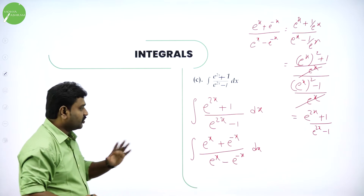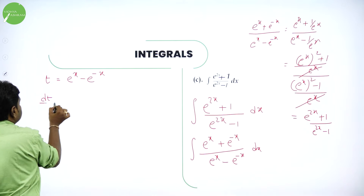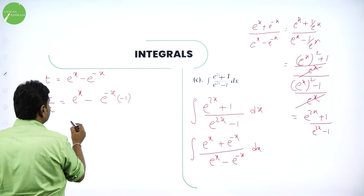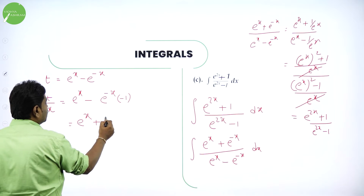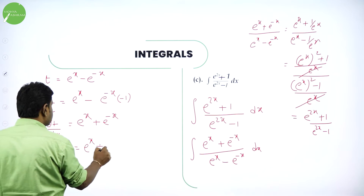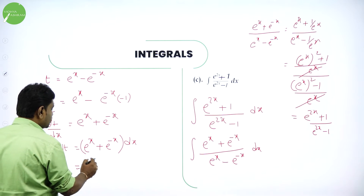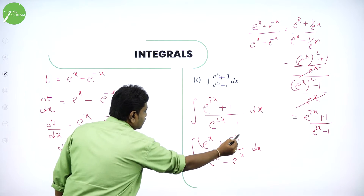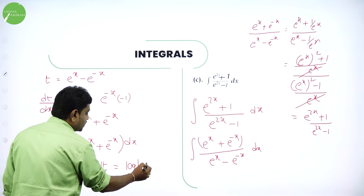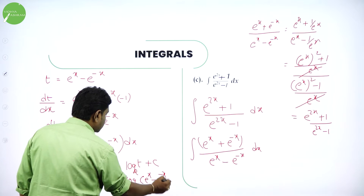Now, take t as denominator. You will get the remaining part. So, put t equal to e power x minus e power minus x. Differentiate both sides. Dt by dx becomes derivative of e power x, which is e power x, minus derivative of e power minus x, which is e power minus x into minus 1. So, it will become e power x plus e power minus x. Now, we need dt: dt is e power x plus e power minus x into dx. So, the given problem becomes integral of dt divided by t. Integration of dt by t is log base e of t plus c, where t is e power x minus e power minus x plus c.